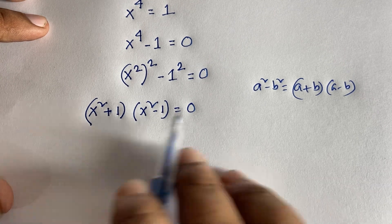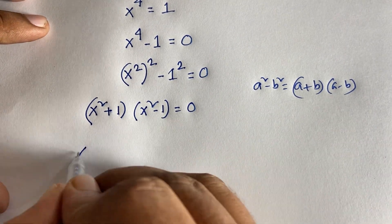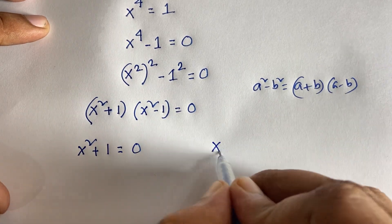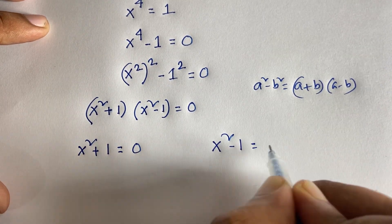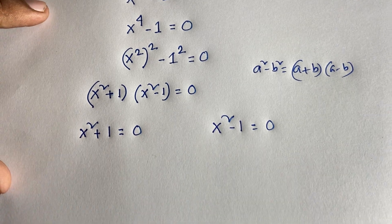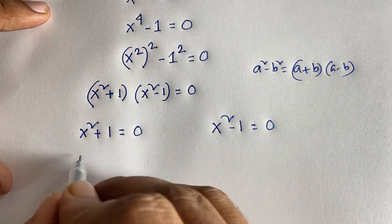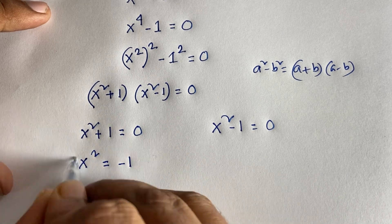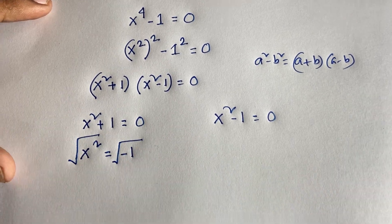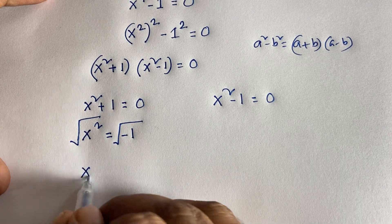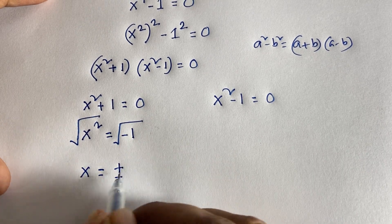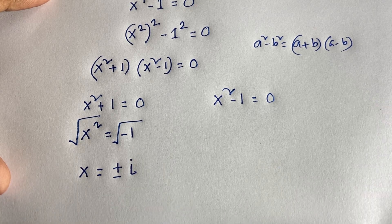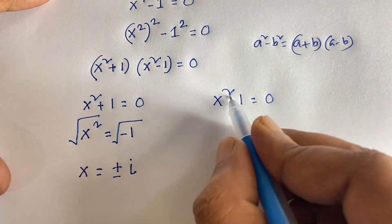Setting each factor equal to zero: first, x squared plus 1 equals 0, which gives x squared equals negative 1. Taking the square root of both sides, x equals plus or minus i, since the square root of negative 1 is i.